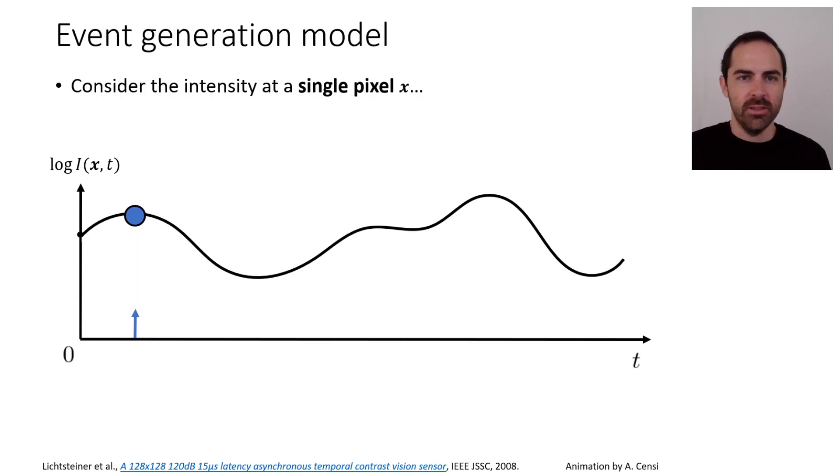If we take a look at a single pixel, how light is converted into events, imagine that we have the log of the intensity at the pixel and it's this black line. We start at zero and then we say that an event is generated whenever the intensity changes by some predefined amount c. So the log intensity at the current time t minus the log of the intensity at the time of the previous event t minus Δt, in this case we are starting at the origin, plus c, it's a positive event.